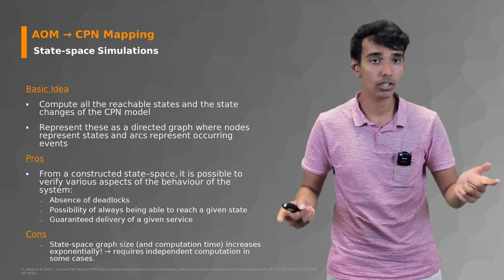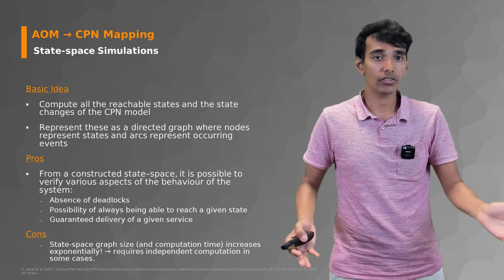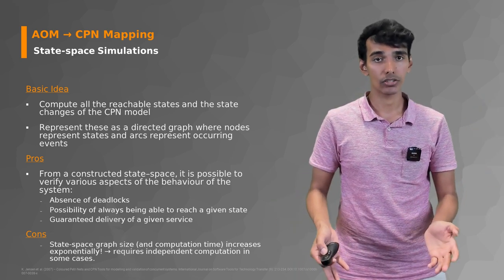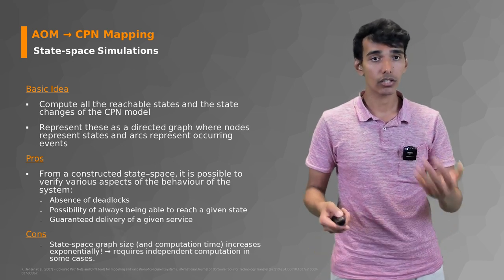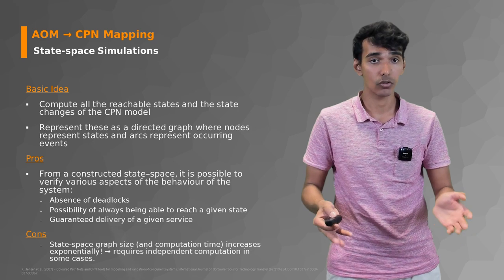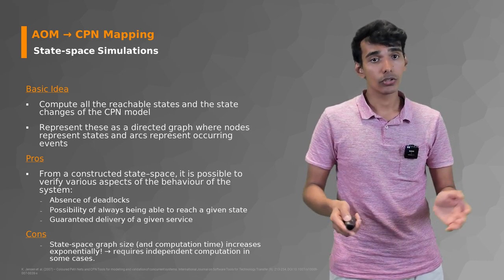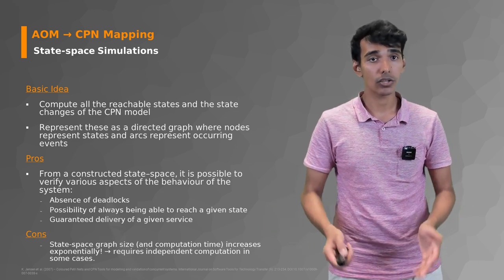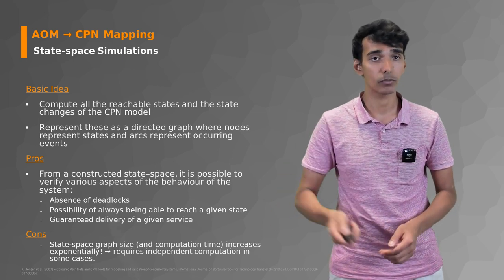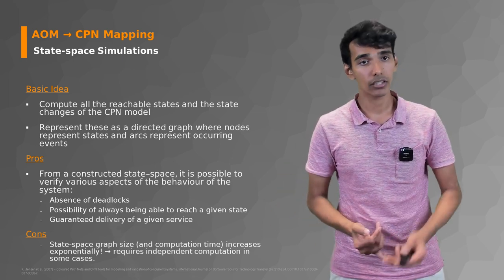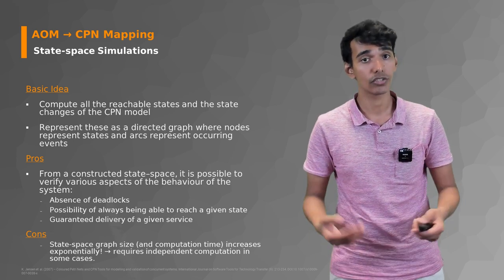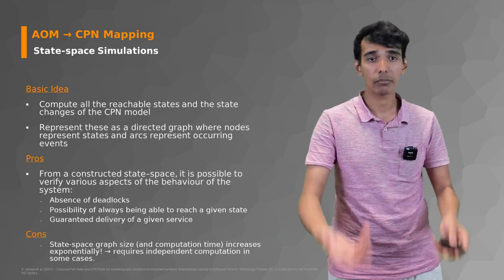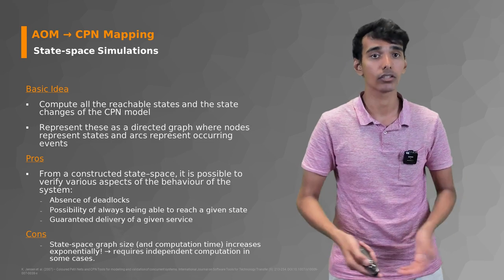This whole process can continue, and we can simulate as many EVs and charging points as we like — this is where state space simulations come into play. In CPN Tools, you can create a state space simulation that will tell you if there are deadlocks, if there's always a possibility of reaching a given state, and if there is guaranteed delivery of a given service. These properties are mathematically defined inside CPN Tools, though a bit too technical for today's discussion.